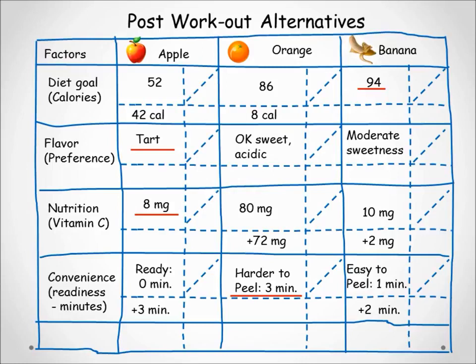For the flavor factor it is a little trickier when the advantage between alternatives is subjective. We need to use comparative terms such as "more than the least preferred," "much more," and "most," where "most" equals the greatest advantage in that factor. For our example, the taste of the orange is more preferred over the least preferred taste of the apple, and the banana has the most preferred taste.